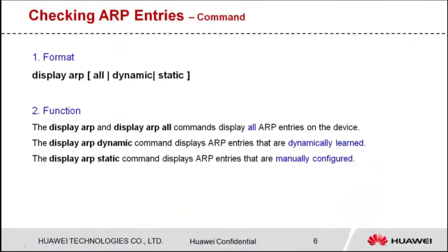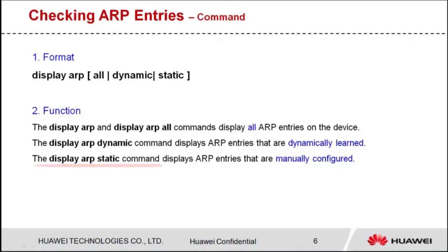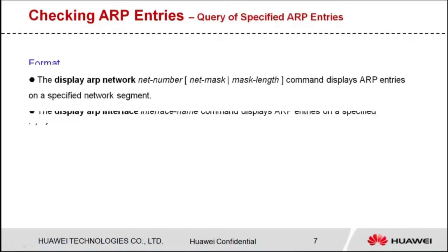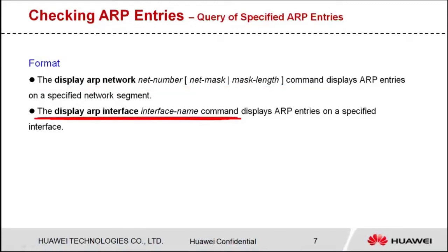How do we query ARP entries? Let's see the following commands. The display ARP and display ARP all commands display all ARP entries on the device. The display ARP dynamic command displays ARP entries that are dynamically learned. The display ARP static command displays ARP entries that are manually configured. When there are many ARP entries on the device, you can check specified ARP entries. The display ARP network command displays ARP entries on a specified network segment, and the display ARP interface command displays ARP entries on a specified interface.